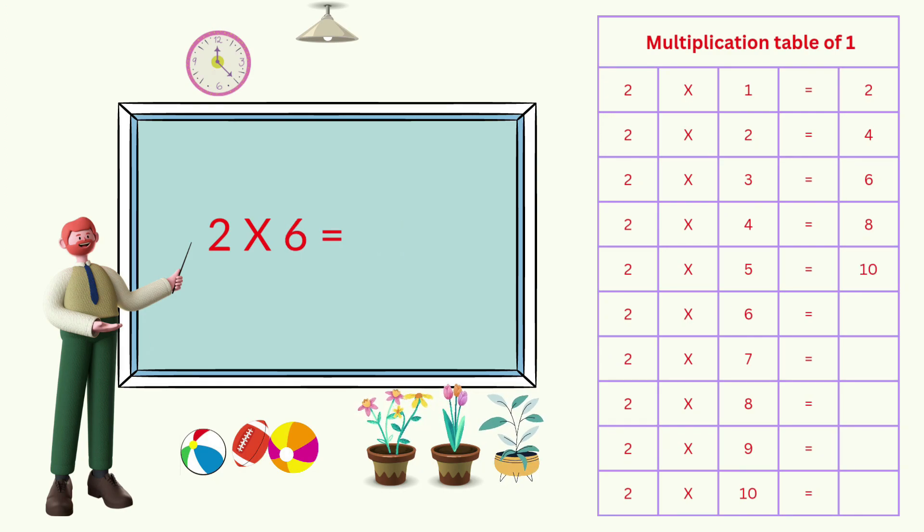2 times 5 equals 10. 2 times 6 equals 12. 2 times 7 equals 14. 2 times 8 equals 16.